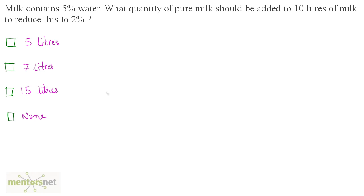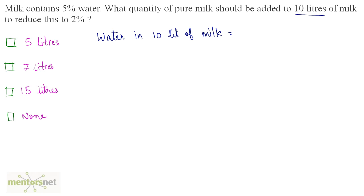Milk contains 5% water. What quantity of pure milk should be added to 10 liters of milk to reduce this percentage to 2% water? It is given that milk contains 5% water, so we can calculate how much water is in 10 liters of milk. Water in 10 liters = 5/100 × 10 = 0.5 liters of water.